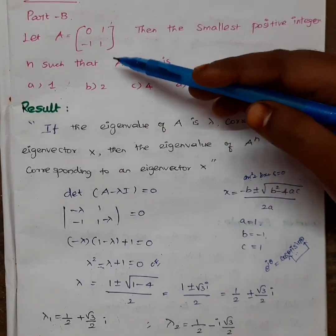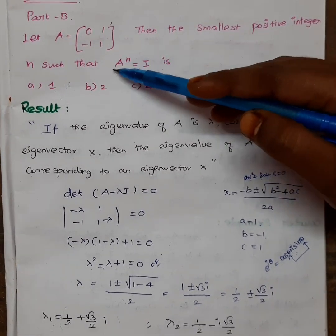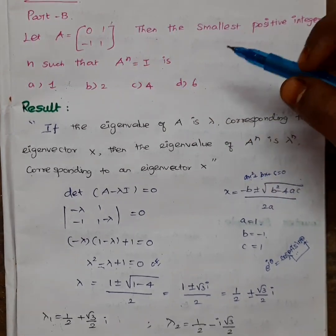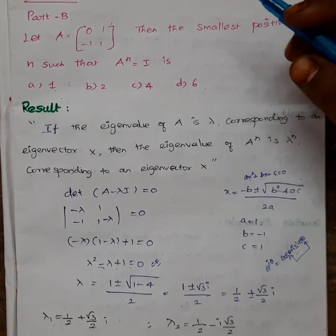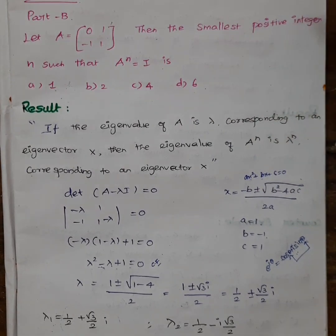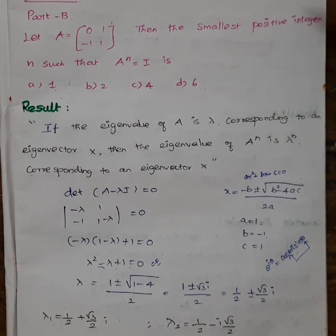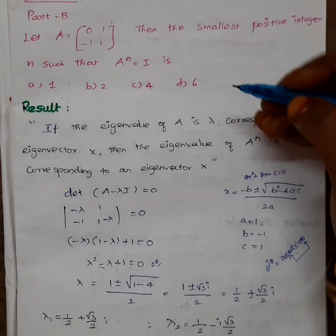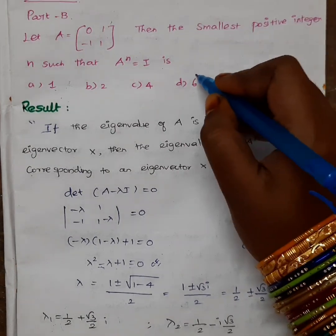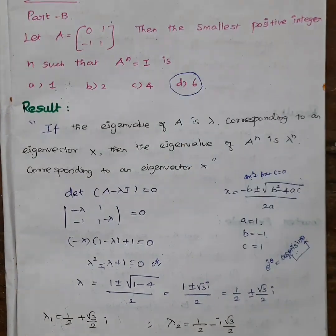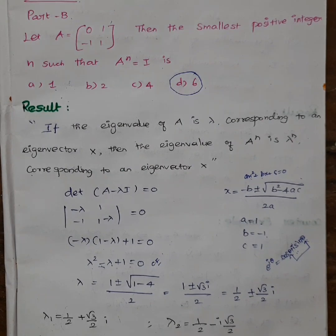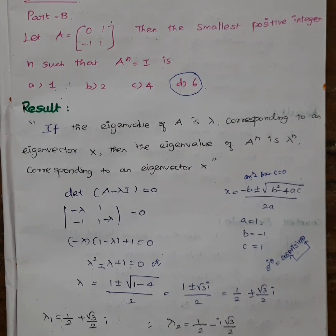If you use a 2×2 matrix it will be easier, but you can also do a 3×3. The condition we need is A^n equals I, and the answer is 6. Thank you. In the next video, we'll see more questions.